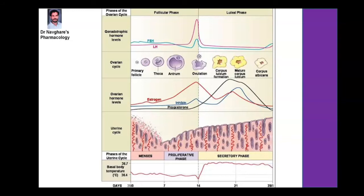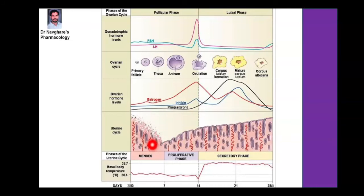This is a schematic representation of the menstrual cycle. The menstrual cycle consists of basically two phases: the follicular phase and the luteal phase. However, some consider the menstrual cycle to have three phases: the menstrual phase, the follicular phase, and the luteal phase. The menstrual cycle is 28 days in total.